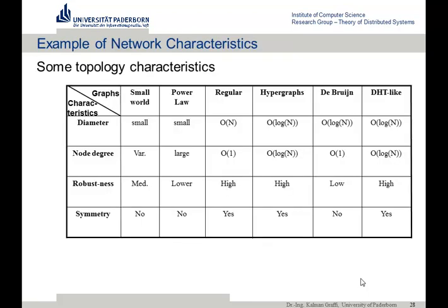Looking at various network types, we can compare them. Taking DHT-like networks, the routing complexity — that's the diameter — is O(log N), and the node degree, meaning the number of contacts a node has, is also log N. In a Bruijn network, that's very fixed — it's the dimension. Robustness tells us how well a network is stable against node failures. If a node fails in the DHT it's not a big issue, but if it fails in a Bruijn network it's very critical, because every node is on a critical path.